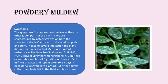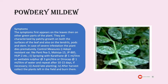Control measures for powdery mildew include adopting resistant varieties like Pant P5, Mildew 15, JP885, HPU2, etc. Also spray with Karathane at 1 ml per liter, or wettable sulfur at 3 grams per liter, or dinocap at 1 ml per liter of water, and repeat after 10 to 15 days if necessary. Avoid late planting and burn the plant debris after harvest.